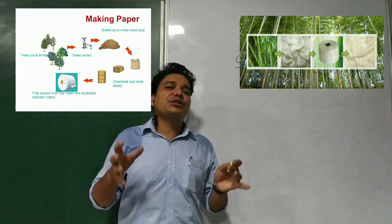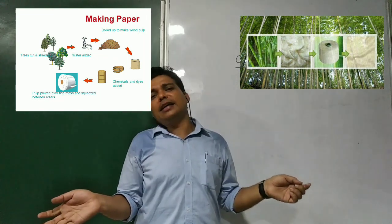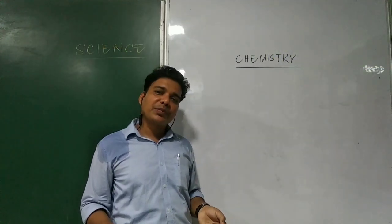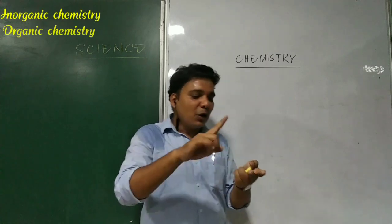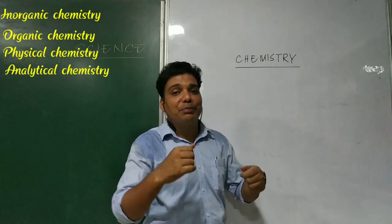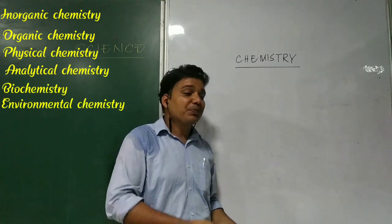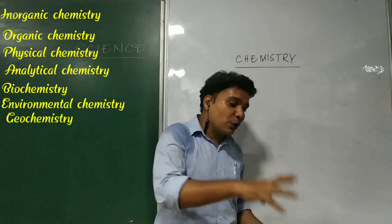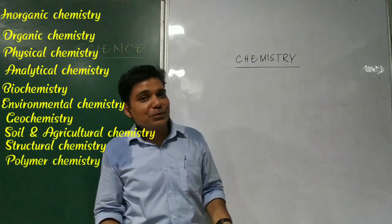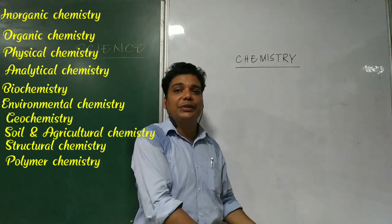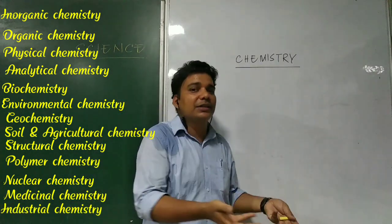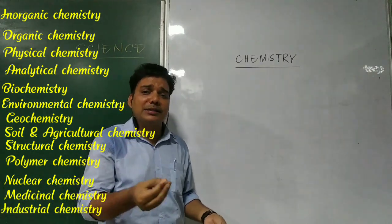In order to make the study of chemistry easier, it is classified into a number of sub-branches: inorganic chemistry, organic chemistry, physical chemistry, analytical chemistry, biochemistry, environmental chemistry, geochemistry, soil and agricultural chemistry, structural chemistry, polymer chemistry, nuclear chemistry, and medicinal chemistry. These are certain important sub-branches of chemistry.